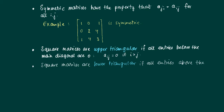The condition for lower triangular is that all entries above the main diagonal are zero, which means that if the column number is higher than the row number, then this should result in a zero element.